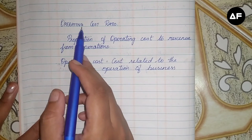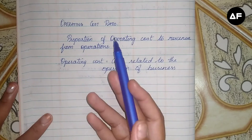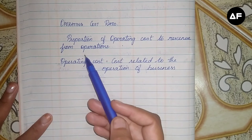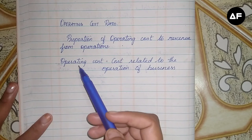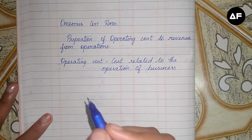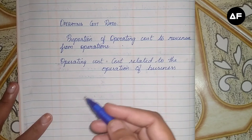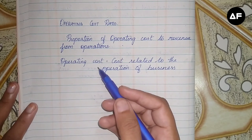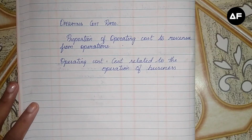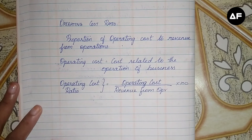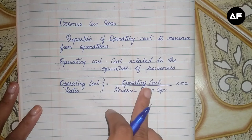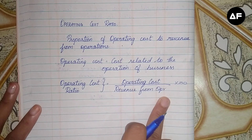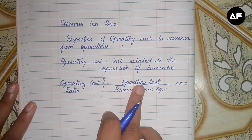Next is the operating cost ratio. The operating cost ratio is a proportion of operating cost to the revenue from operations, that is the sales of the business concern. The formula for the operating cost ratio is: operating cost divided by revenue from operations, into 100. Revenue from operations will be clearly given in the sum.